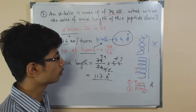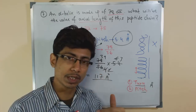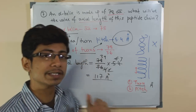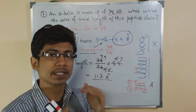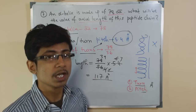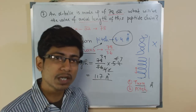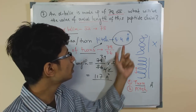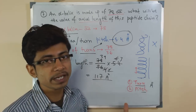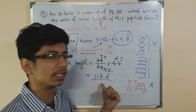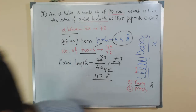The key to solving this question is knowing two things: the pitch — the distance between two successive turns — and the number of amino acids per turn. Once you know the number of amino acids per turn, you can calculate the total number of turns. Multiply that by the pitch, and you get the exact axial length of the protein.